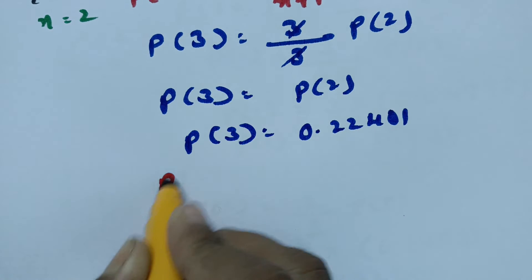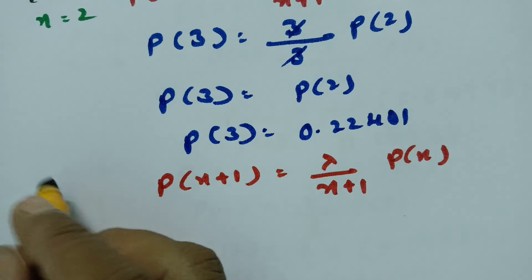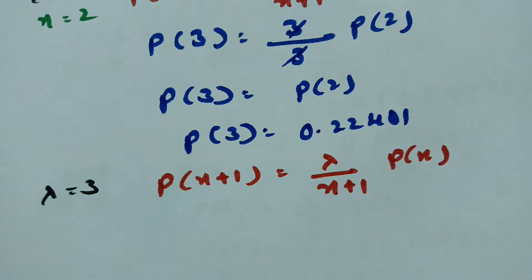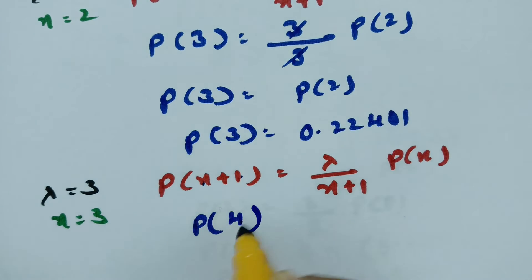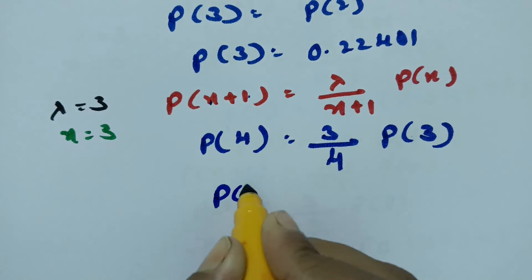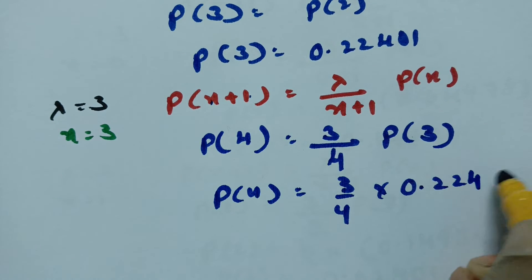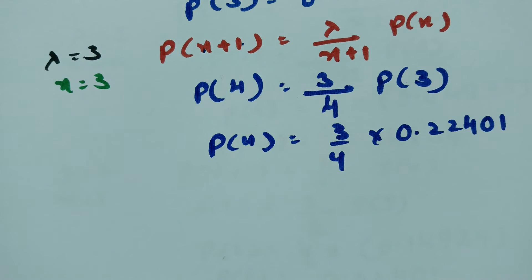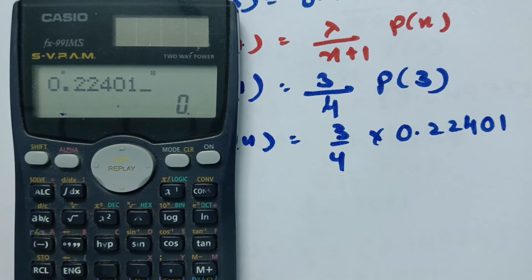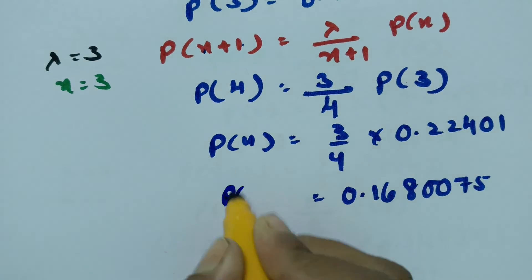Using the recurrence formula again with lambda = 3 and x = 3: P(4) = (3 / (3 + 1)) × P(3) = (3 / 4) × 0.22401 = 0.1680075.